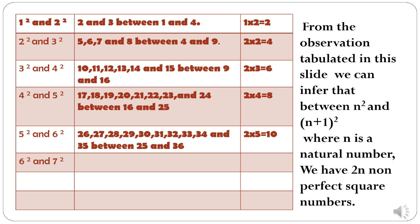that means between 4 and 9, we have 4 non-perfect square numbers. That is 5, 6, 7, and 8.